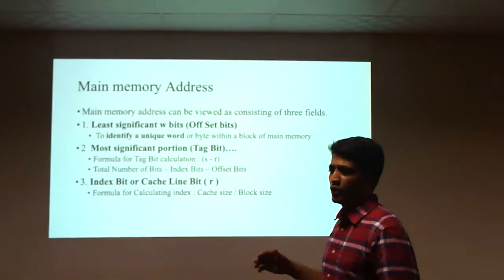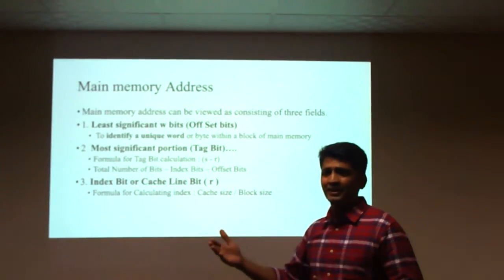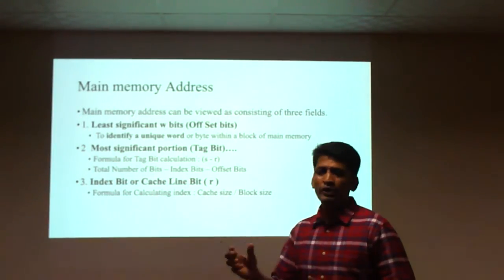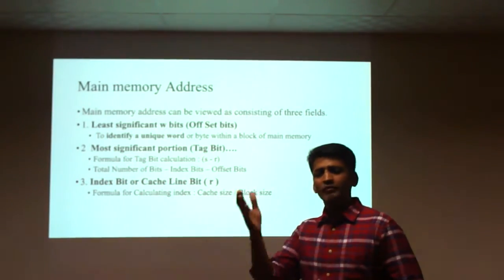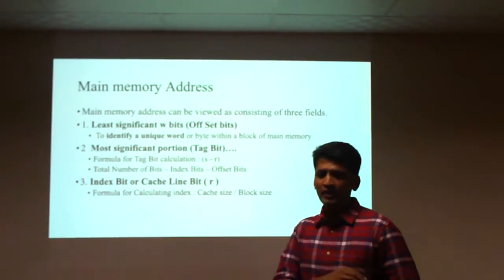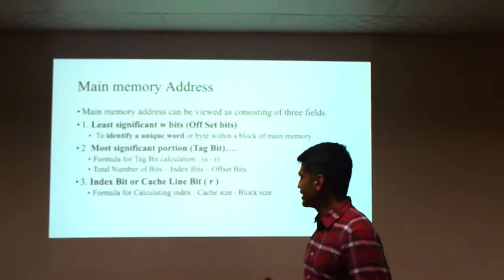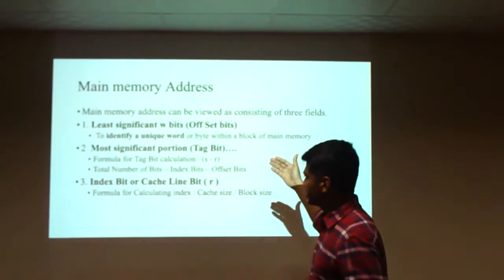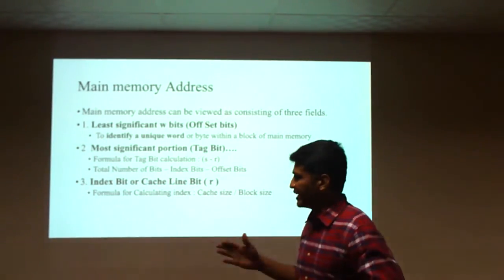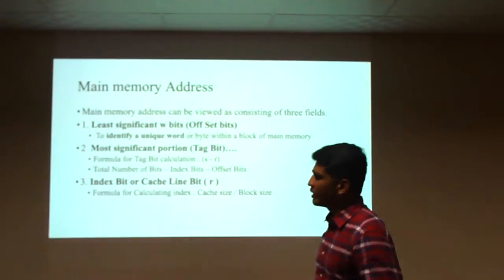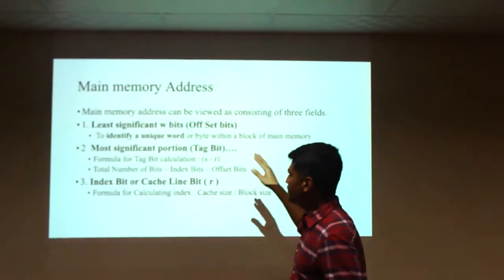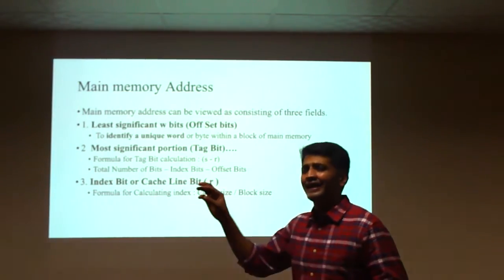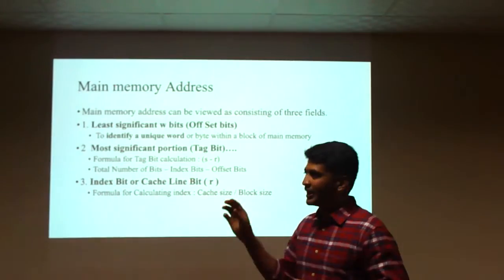In the next slide, we look at the components of the main memory address. To reach the main memory you need a logical address, which is generated by the processor. There are three components: the offset bit, the tag bit, and the index bit. The offset bit is used to identify the exact data in the exact memory location.